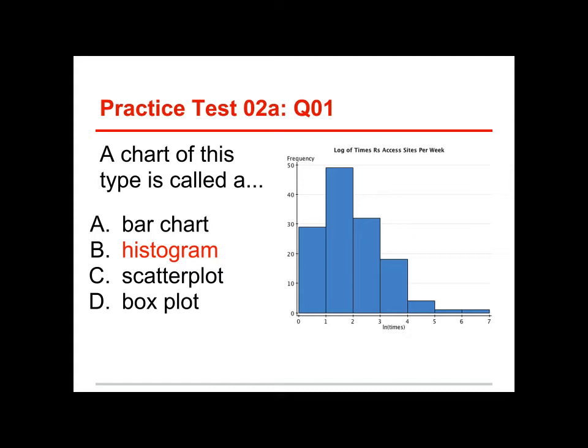Remember, a histogram comes from the Greek word for writing of masts, like the masts of ships in a harbor. A histogram is like a bell curve, and it's used for quantitative variables. A bar chart looks similar, but the bars are separate from each other because they simply represent different categories.